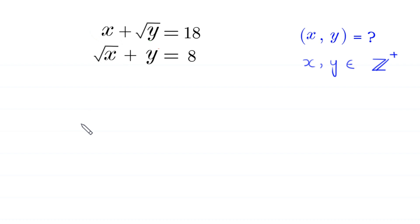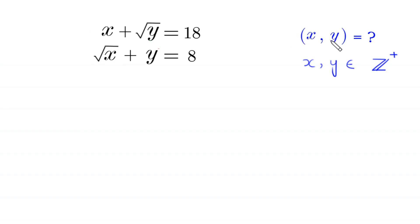Hello everyone, you are welcome to how to solve this very nice system of equations. x plus root y is equal to 18, and root x plus y is equal to 8. Our job is to find all possible values of x and y such that x and y are positive integers.